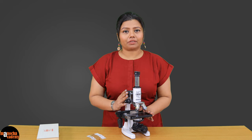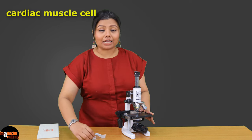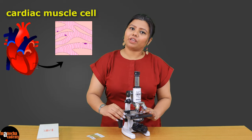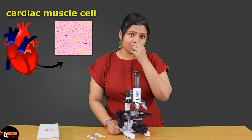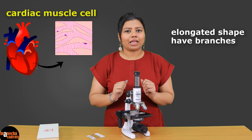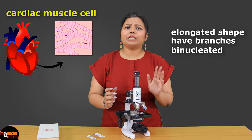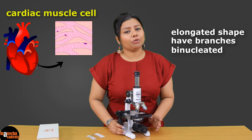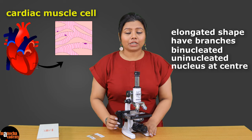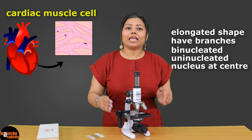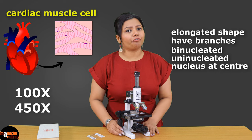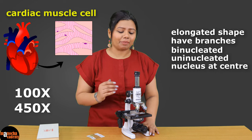Let us start with the cardiac muscle. As you all must remember, cardiac muscles are present in the wall of the heart. These are muscles which are elongated in shape, they have branchings, and they are usually binucleated. They may be uninucleated also and the nucleus is located at the center. Let us see how it looks at 100x or 450x magnification.